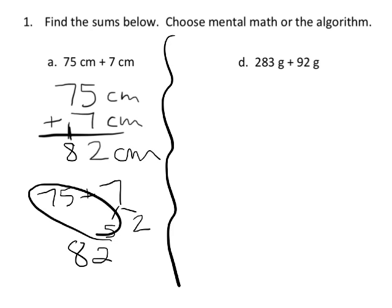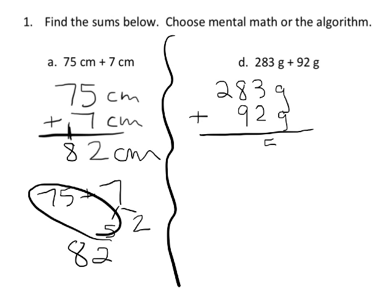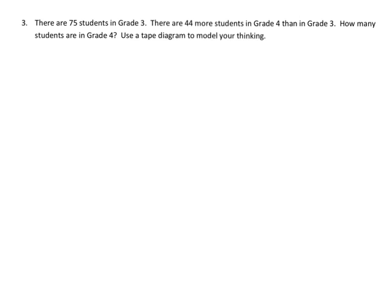Moving on, we have 283 grams plus 92 grams using the standard algorithm. Three plus two is five. Eight plus nine is 17, so we put the 7 here and carry the 1 up top. Then 100 plus 200 is 300, giving us 375 grams as the final answer.